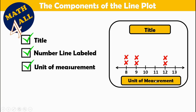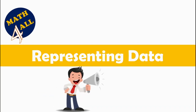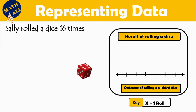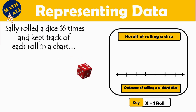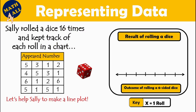Then the last and most important component: we need a key to read this line plot. This key will tell us the value of each X. Now let's represent data using the line plot. In the first example, Sally rolled a dice 16 times and kept track of each roll in a chart. Let's help Sally make a line plot.